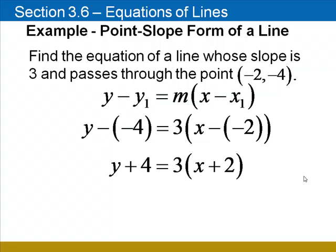Remember that when we subtract a negative value, it's the same as adding a positive value, so we'll rewrite the left side as y plus 4, and the right side as x plus 2. Now we distribute the 3: 3 times x is 3x, plus 3 times 2 is 6, and we finish by solving for y by subtracting 4 from both sides. The equation of this line is y equals 3x plus 2.